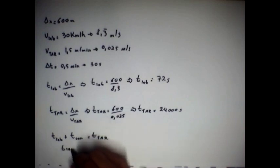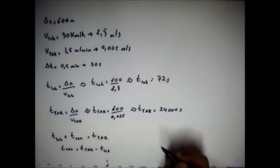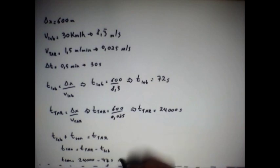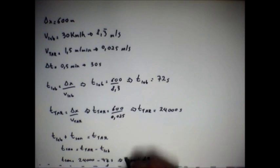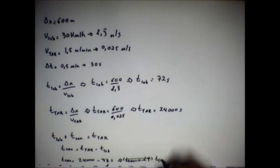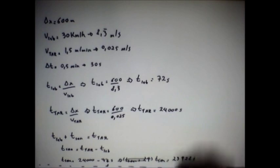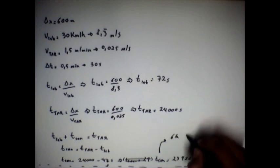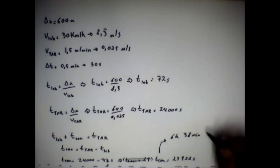Então, o tempo da soneca vai ser o tempo da tartaruga menos o tempo que a lebre gasta para percorrer o percurso. Então, o tempo da soneca vai ser 24 mil menos 72 segundos, isso implica que o tempo da soneca vai ser 23 mil 928 segundos. Se eu quiser transformar isso em hora, minuto e segundo, eu vou ter 6 horas, 38 minutos e 48 segundos.